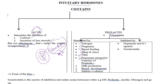Prolactin's job is milk production, breast development, and inhibition of ovulation. Because in a breastfeeding lady, ovulation should not occur, as that would further suppress milk production. Prolactin is inhibited by dopamine and its agonists — which we have already studied — and somatostatin, which is the master of inhibition.